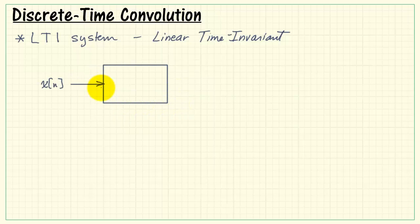Let's explore this concept in a little more detail. I have a system with an input sequence x of n that produces an output sequence y of n. The system has impulse response h of n.